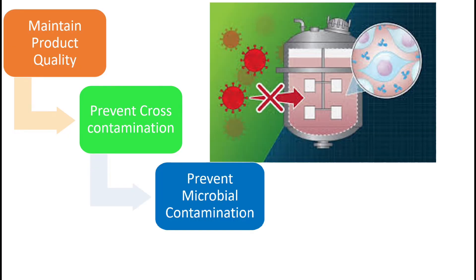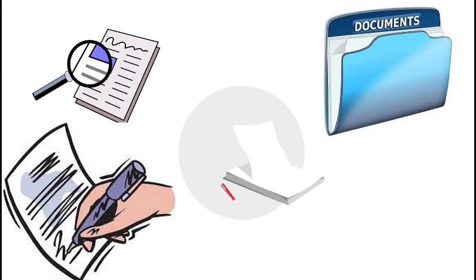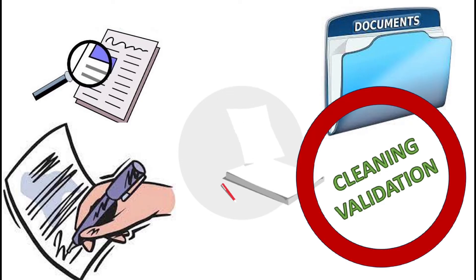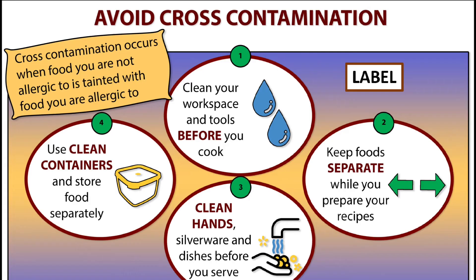We also need to prevent microbial contamination — only then can we say the equipment or instrument is properly cleaned. When we clean everything, we also need to document that. We need to document everything we do in pharmaceutical industry. When this cleaning process is done and documented, it is called cleaning validation.